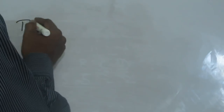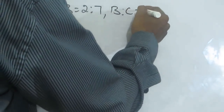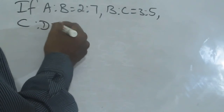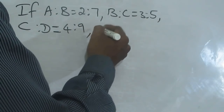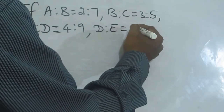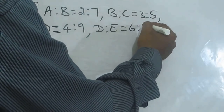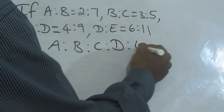Let's do one more — the last case. If A is to B equal to 2 is to 7, B is to C equal to 3 is to 5, C is to D equal to 4 is to 9, D is to E equal to 6 is to 11. The question is find A is to B is to C is to D is to E.